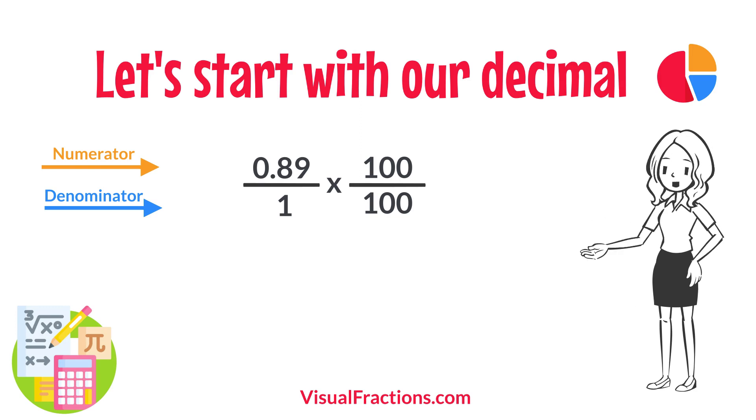So, 0.89 times 100 gives us 89, and 1 times 100 gives us 100. This translates 0.89 to the fraction 89 over 100.